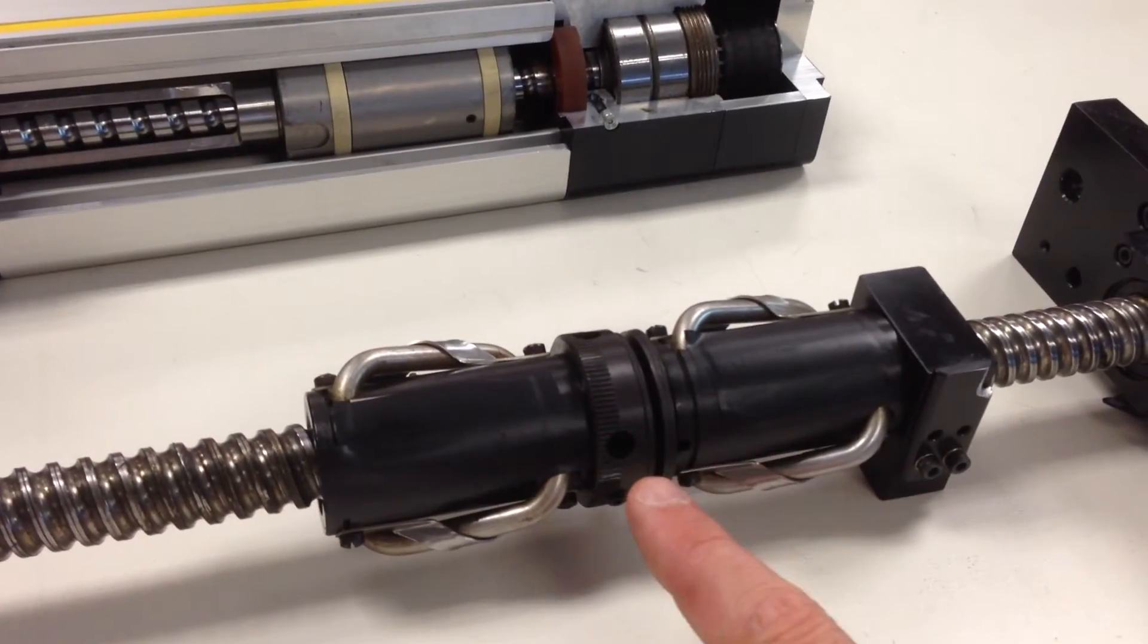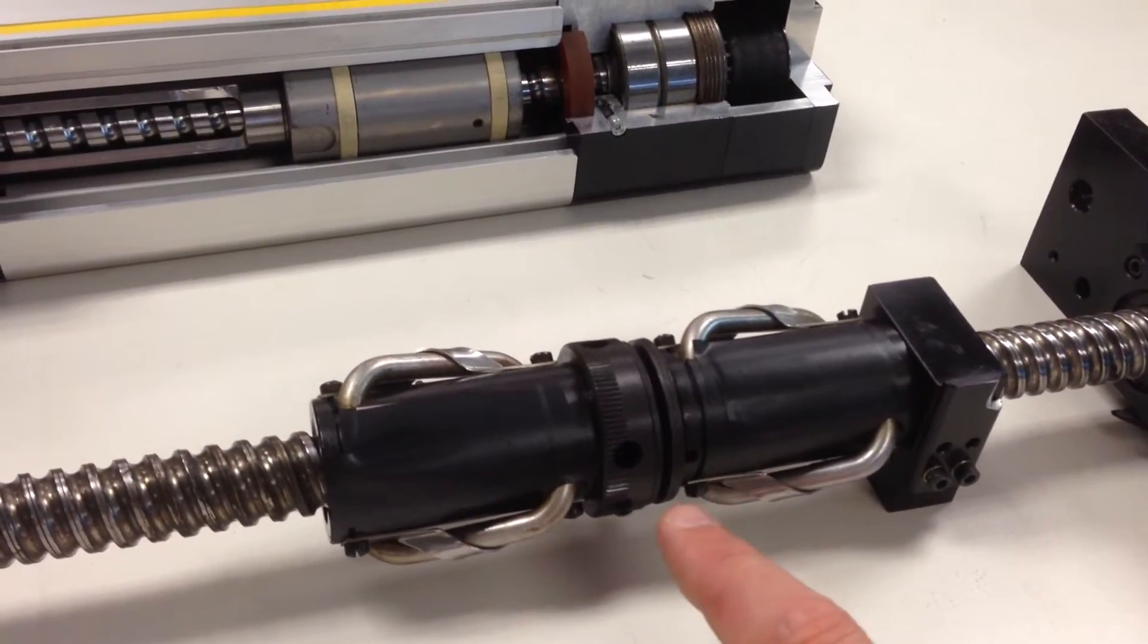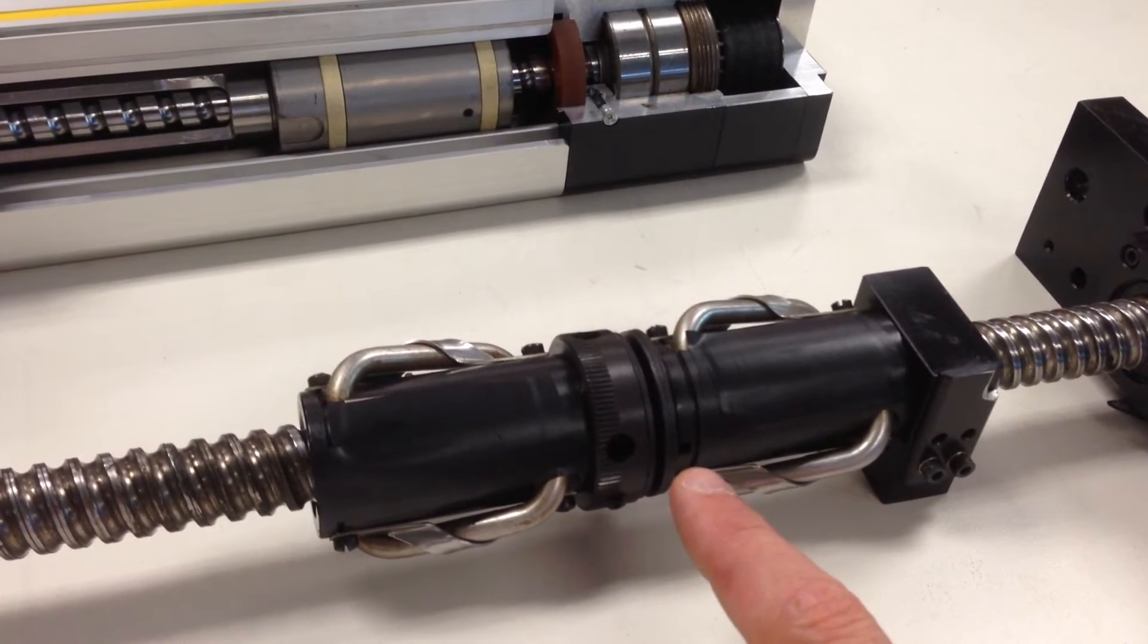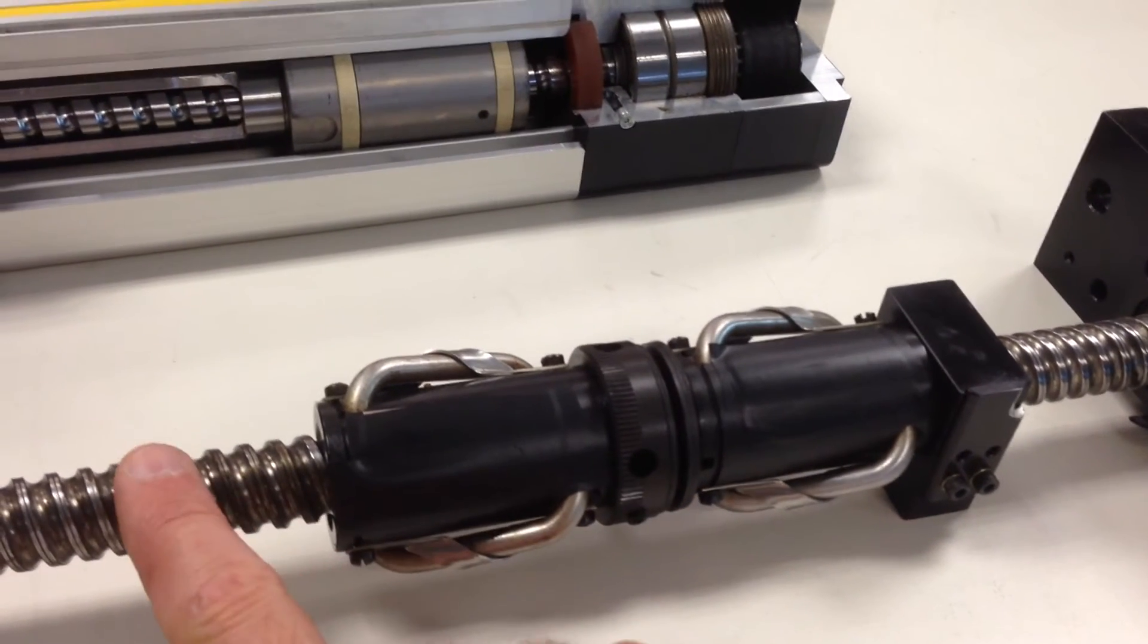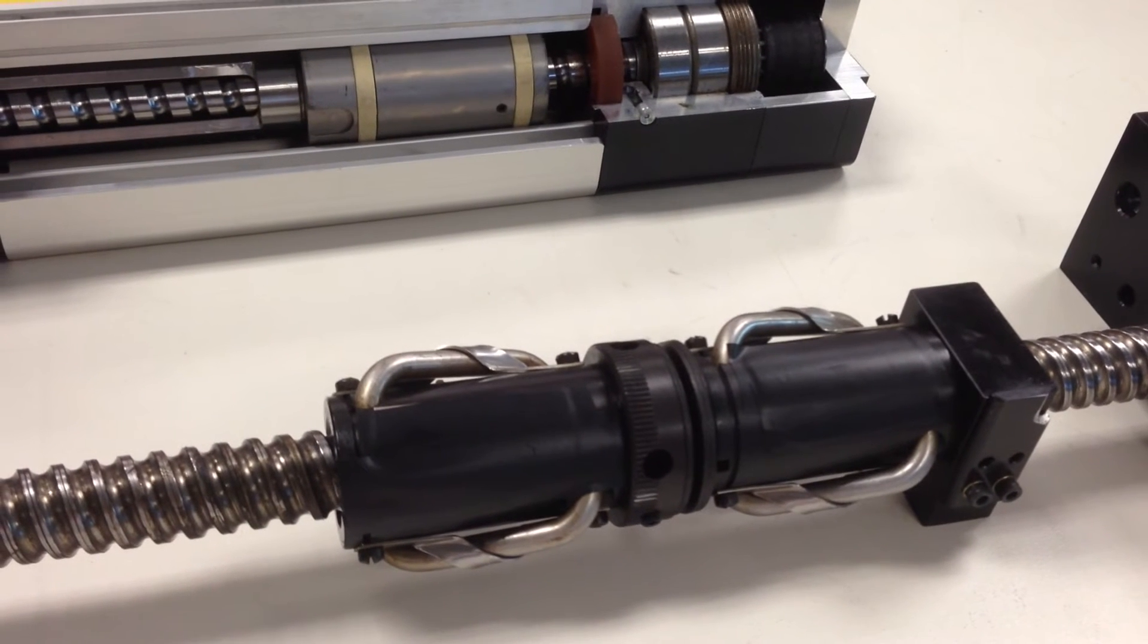This is a double nut. There are actually two ball nuts joined together. This is done on some systems to minimize the backlash. Ball screws have different accuracy grades as well. Some are rolled and some are ground.